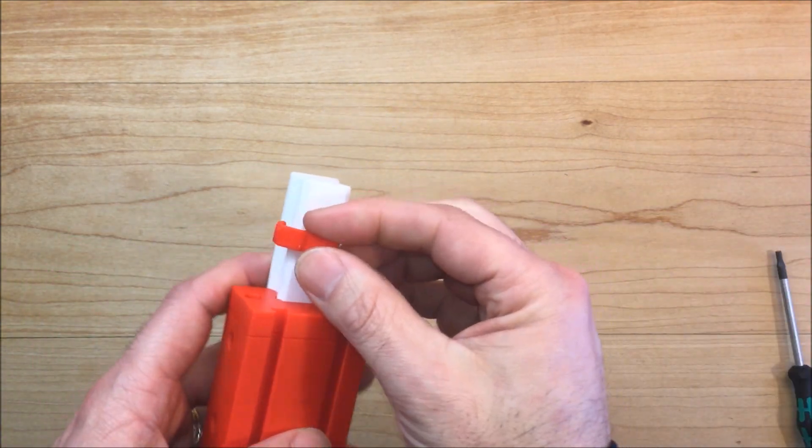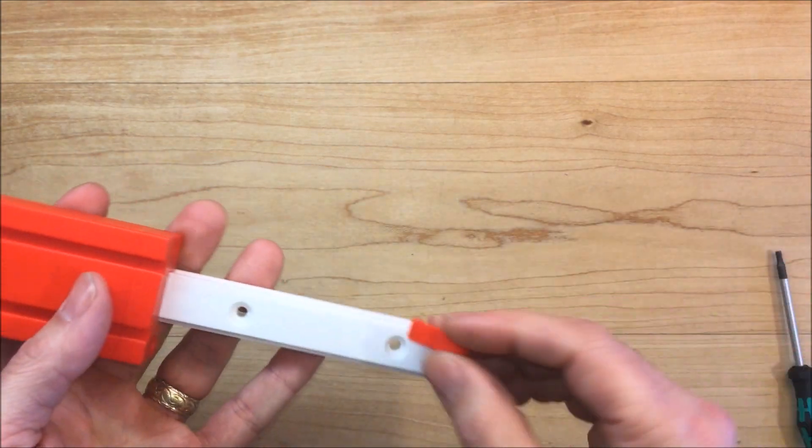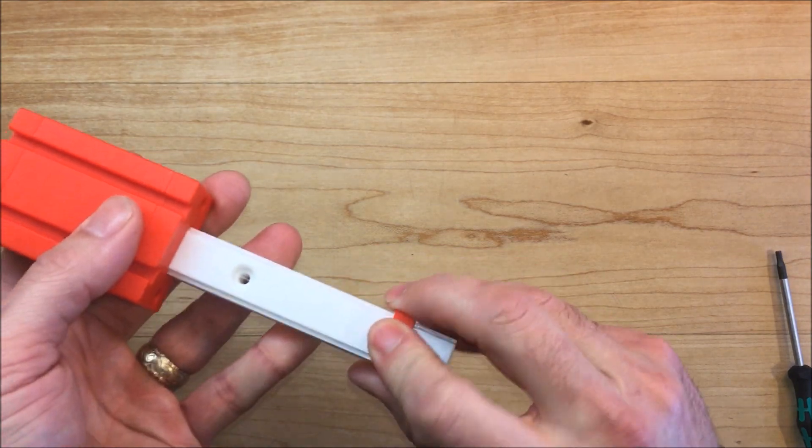Then I designed these little clips so you can clip them on so you don't accidentally make your bearing fall off before you bolt it down. Your bearing should slide easily.